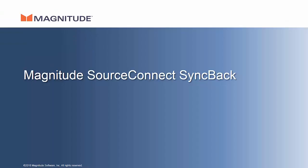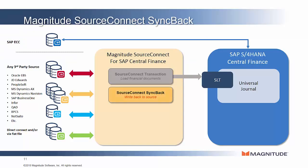SourceConnect Syncback is the next of the modules covered in this video. It picks up where SourceConnect Transaction leaves off. In the case of a shared service deployment of Central Finance, many operations are now done within Central Finance itself rather than the source systems — this is true for AP payments, AR cash applications, and other transactions related to customer invoices. In these cases, it's often necessary to write back to the source system to close out the source transactions. This is the specific job of SourceConnect Syncback.